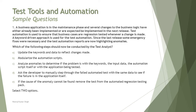A business application is in the maintenance phase and several changes to the business logic have either already been implemented or are expected to be implemented in the next release. Test automation is used to ensure that business cases are regression tested whenever a change is made. A keyword-driven approach is used for test automation. Since the last release, some emergency fixes were necessary and the test automation reports are now highlighting anomalies. Which of the following steps should now be conducted by the test analyst?